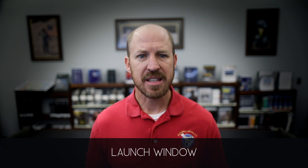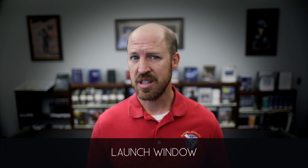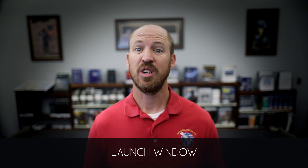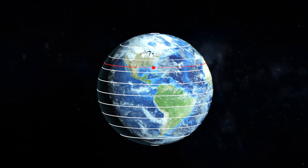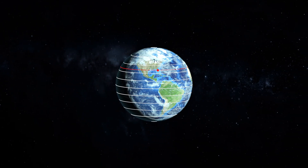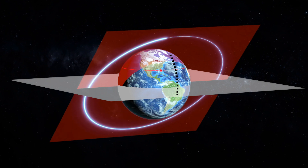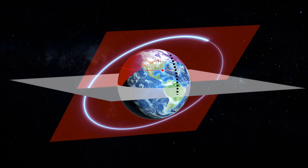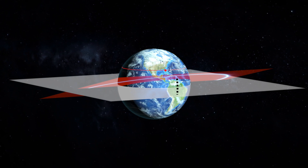The launch vehicle capability is just one constraint to consider to get into orbit. When you can launch is another constraint — we refer to this time constraint as the launch window. The size of the launch window can range from a few seconds to hours. The duration of the window is a factor of Earth's rotation, the launch site latitude, launch vehicle performance, and weather, to name a few. The launch site latitude determines the minimum inclination the launch vehicle can insert the spacecraft without propellant-costly out-of-plane thruster maneuvering. So, if the desired orbital inclination is equal to or greater than the launch site latitude, then you can launch directly into the desired orbit. If the desired inclination is less than the launch site latitude, then you cannot launch into that orbit without costly thruster maneuvering.